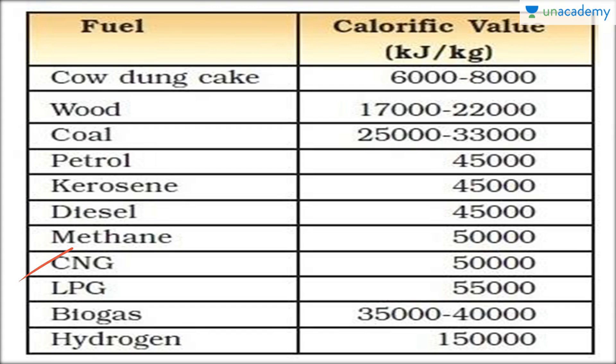Methane has around 50,000 kilojoules per kg. CNG, that is compressed natural gas, also has around 50,000 kilojoules per kg. LPG, that is liquefied petroleum gas, has around 55,000. Biogas has around 35,000 to 40,000. And hydrogen has around 150,000 kilojoules per kg. As you can see, hydrogen has the highest calorific value, which is why it is used in hydrogen bombs and is the most energy-dense substance on earth.